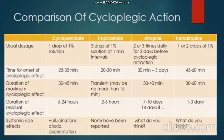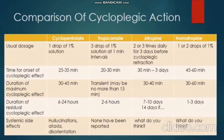Homatropine: one to two drops of one percent solution. Time of onset of cycloplegic effect is about 40 to 60 minutes. Duration of maximum cycloplegic effect occurs at 30 to 60 minutes. Residual cycloplegic effect lasts about one to three days. Systemic side effects are for you to find out.